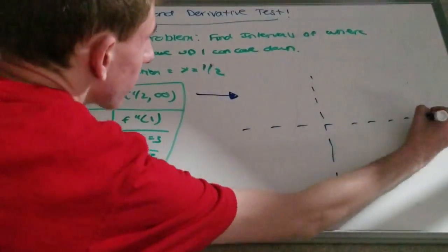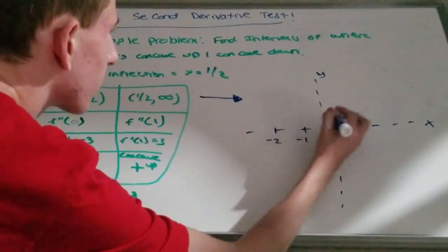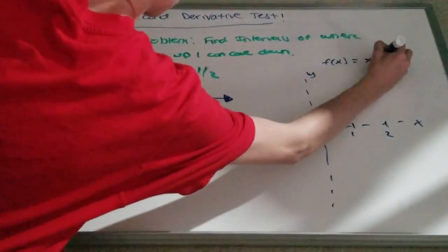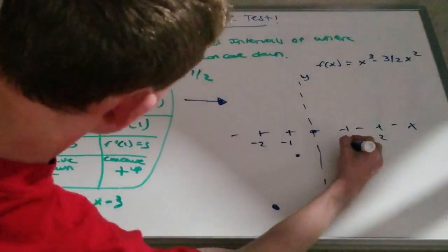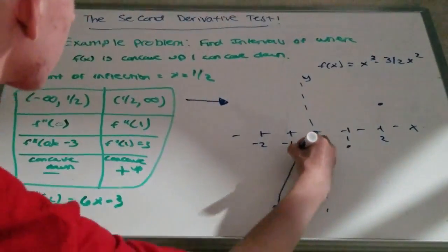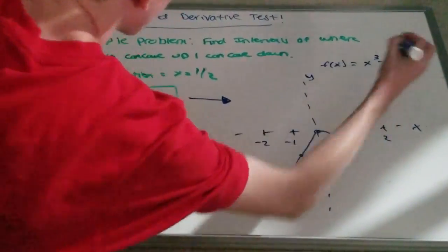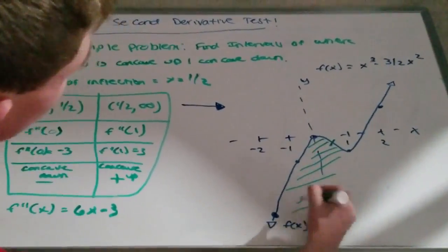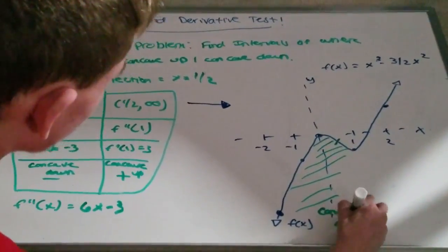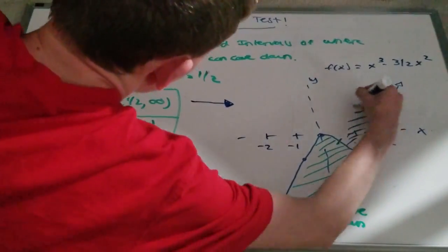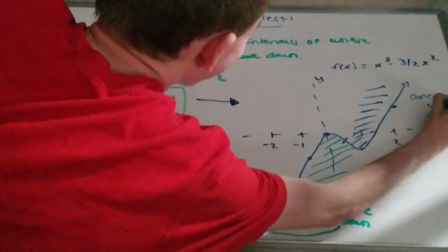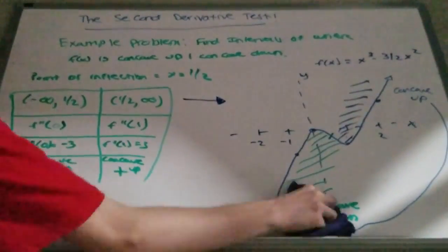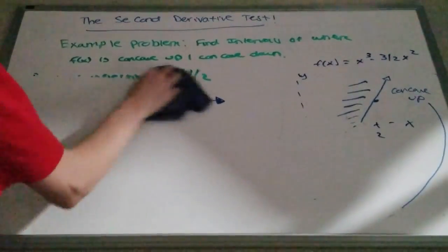Just like in the first derivative test, we can also draw a graph of the second derivative showing the concavity. And that's the end of the second derivative test.